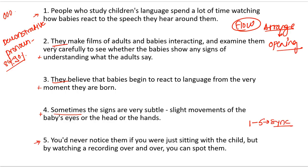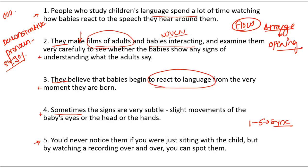So the first one and the fifth one are in sync — they go with one another. Now check second, third, and fourth. 'They make films of adults and babies interacting and examine them very carefully.' Here we talk about films of adults and babies interacting. Before, we talked about 'spent a lot of time watching how babies react' — same point continuing. Then comes: 'They believe that babies begin to react to language from the very moment they are born.'